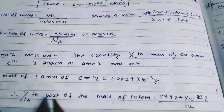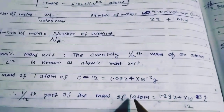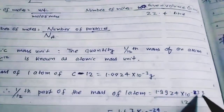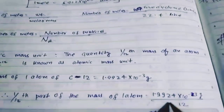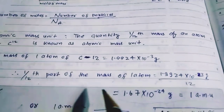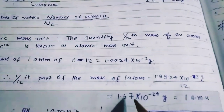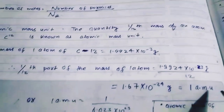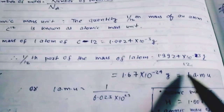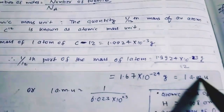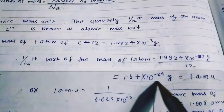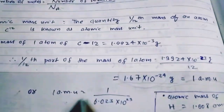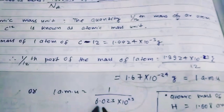So one by 12th part of the mass of one atom of C-12 is equal to 1.9924 into 10 to the power minus 23 gram divided by 12, which equals 1.67 into 10 to the power minus 24 gram. This is equal to one amu.